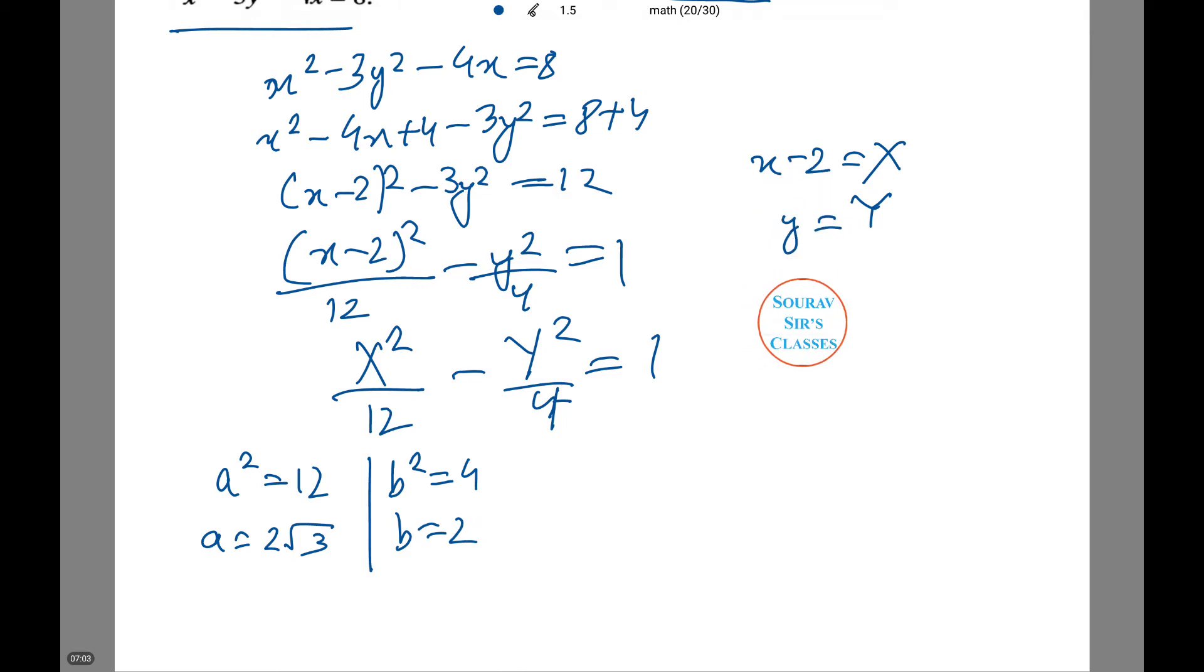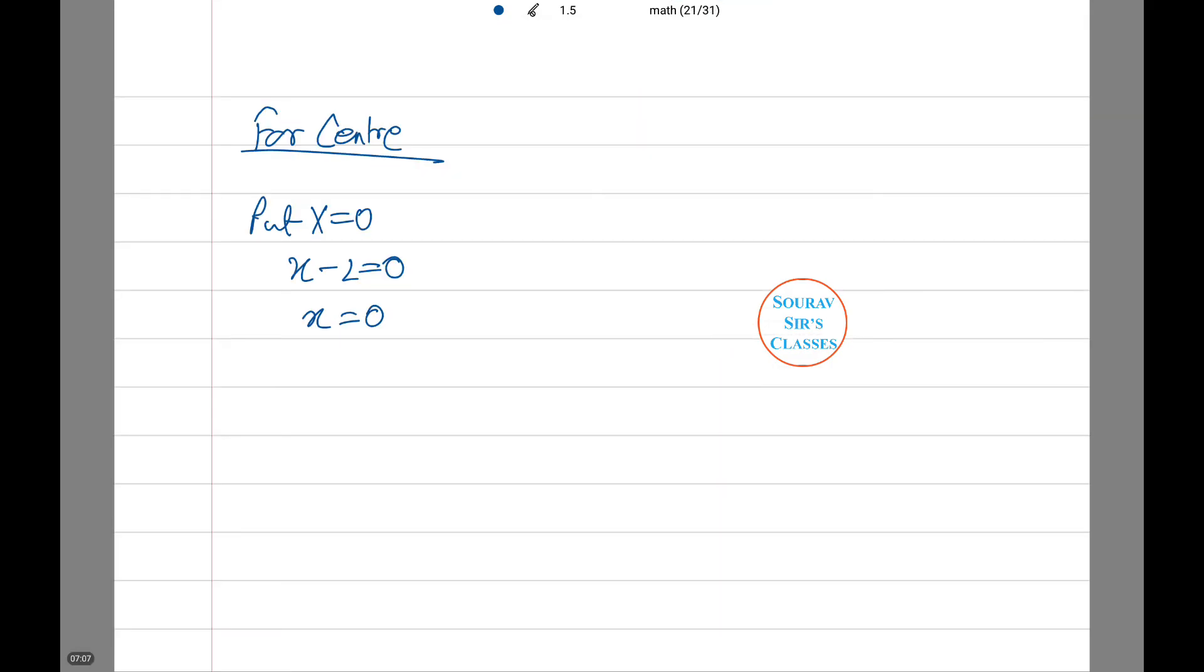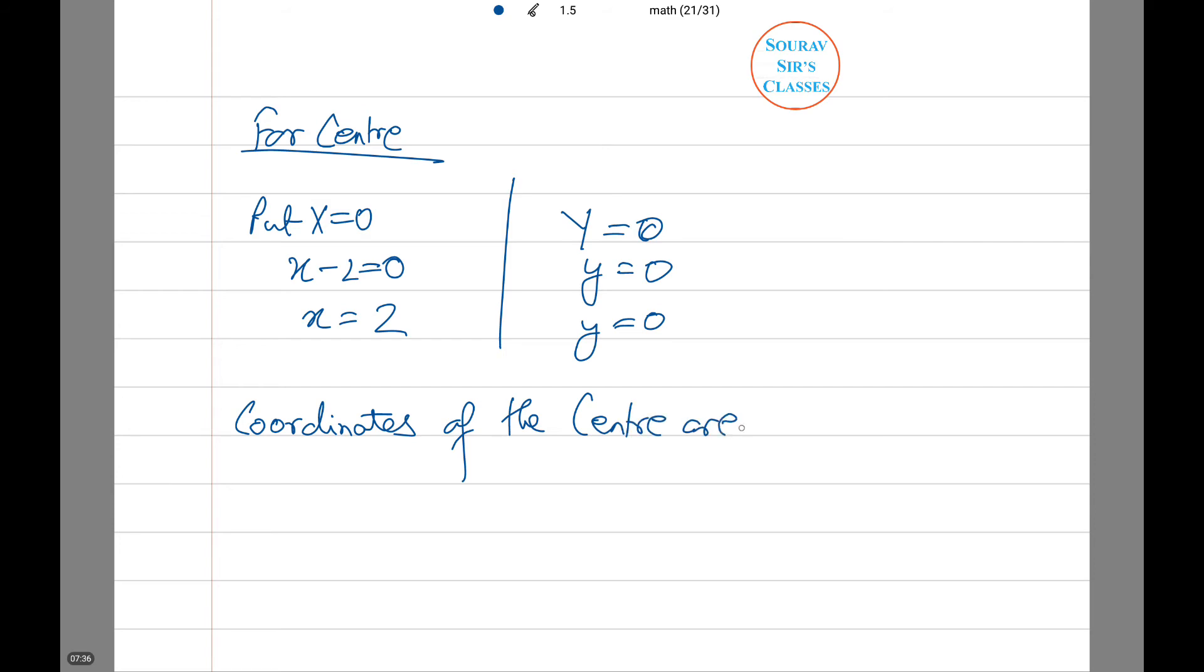Now for center and foci I will be doing it in a new page. For center, put X equals 0, so x minus 2 equals 0, x equals 2. Similarly we do it for y, y equals 0. Thus the coordinates of the center are (2, 0).